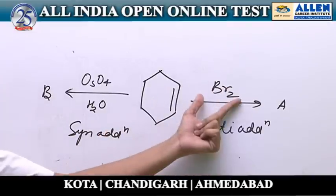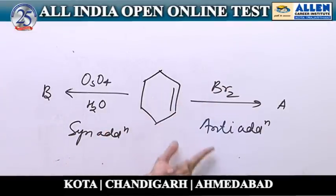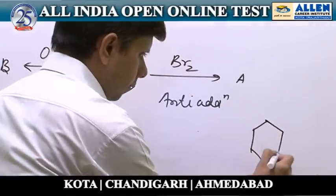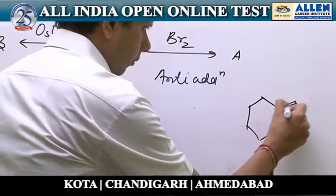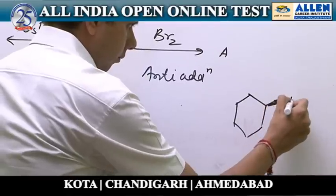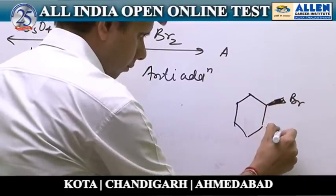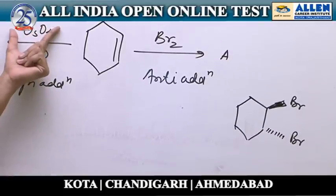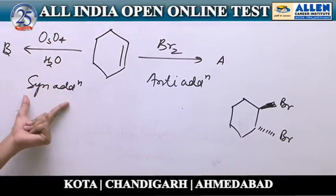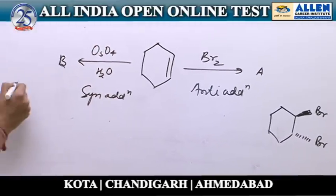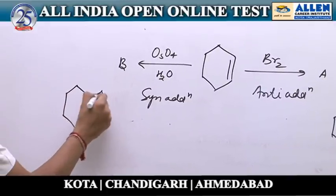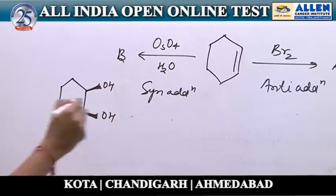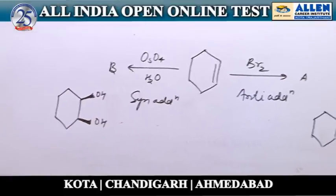In this case, addition of bromine on alkene will be anti-addition to give this product. And the reaction with osmium tetroxide followed by hydrolysis involves syn-addition to give this compound as the final product. So the correct answer is the fourth option.